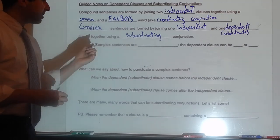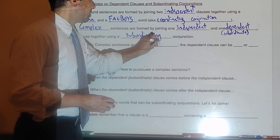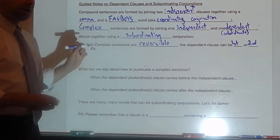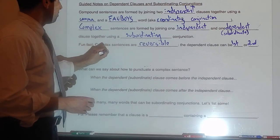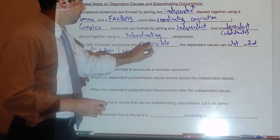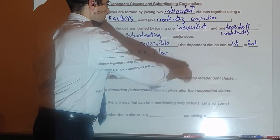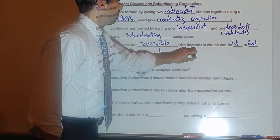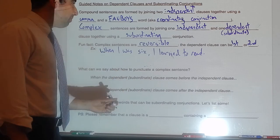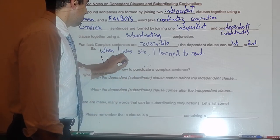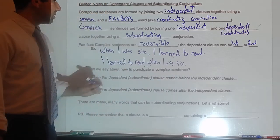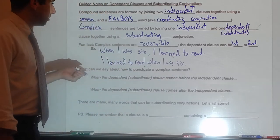Here's a fun fact: complex sentences are reversible. The dependent clause can be first or second. For example, 'When I was six, I learned to read' could just as easily be 'I learned to read when I was six,' with no comma in it.